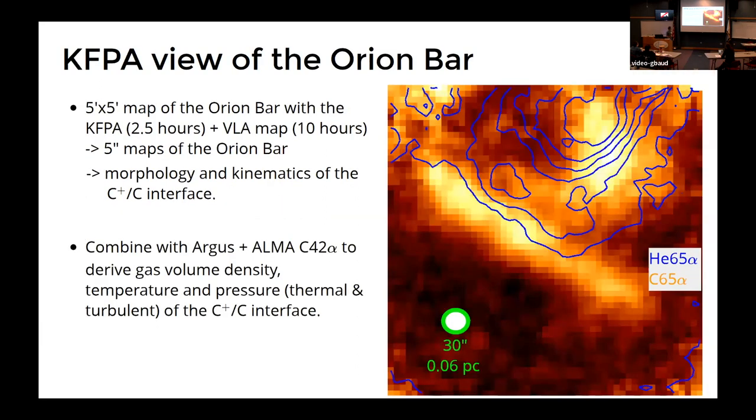So for this particular project, what we wanted to do was map it using the KFPA. We spent two and a half hours to get this map here on the right. So you can see in color the carbon radio recombination line emission, which shows very clearly the Orion Bar.